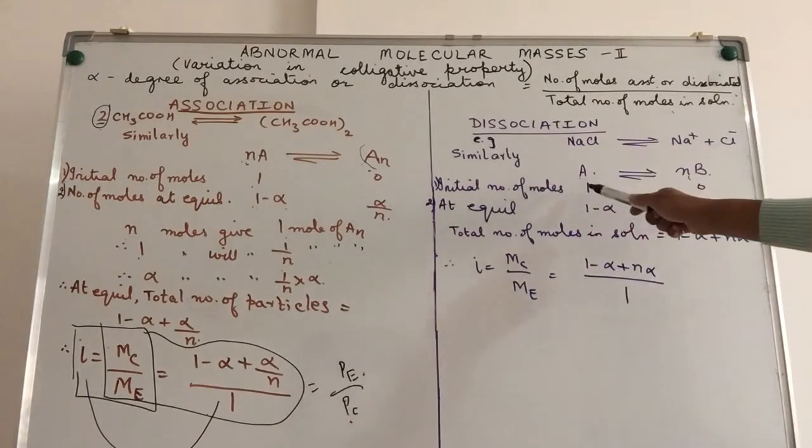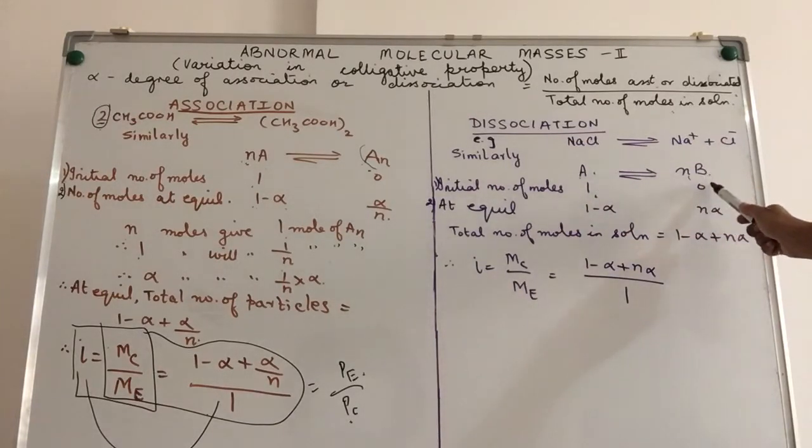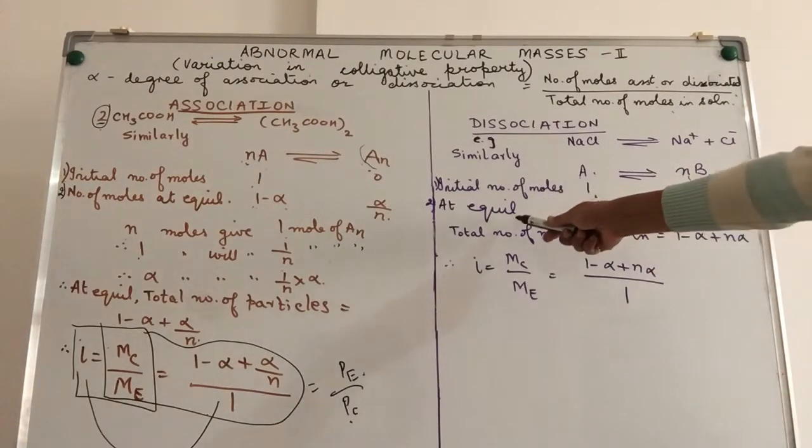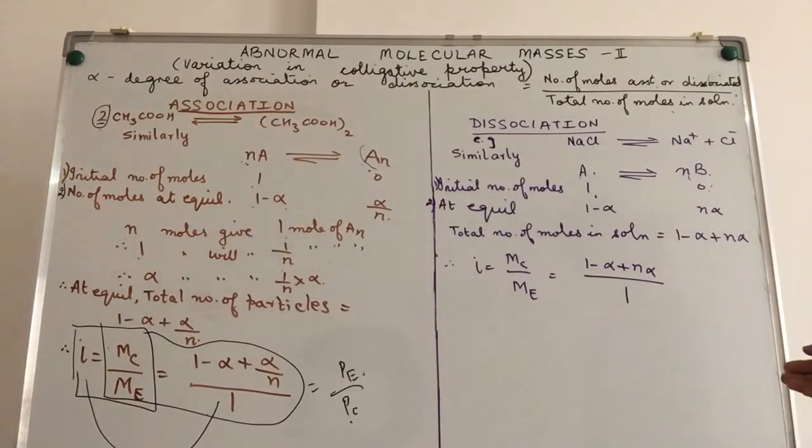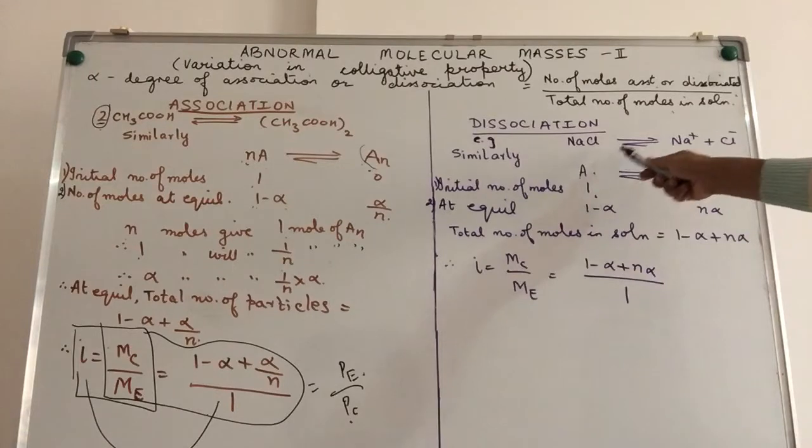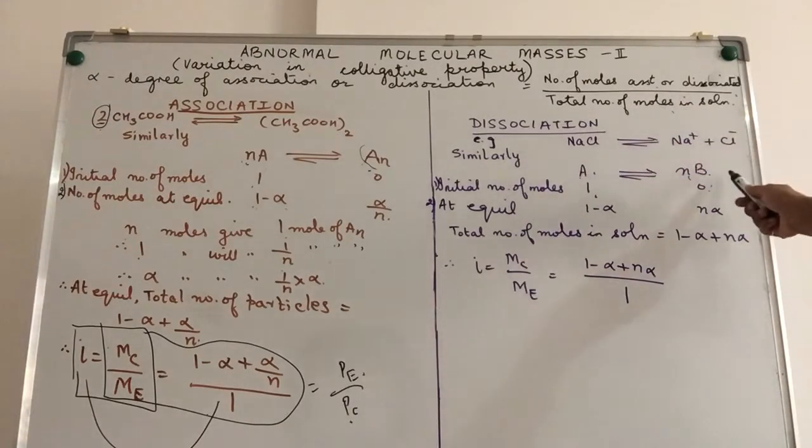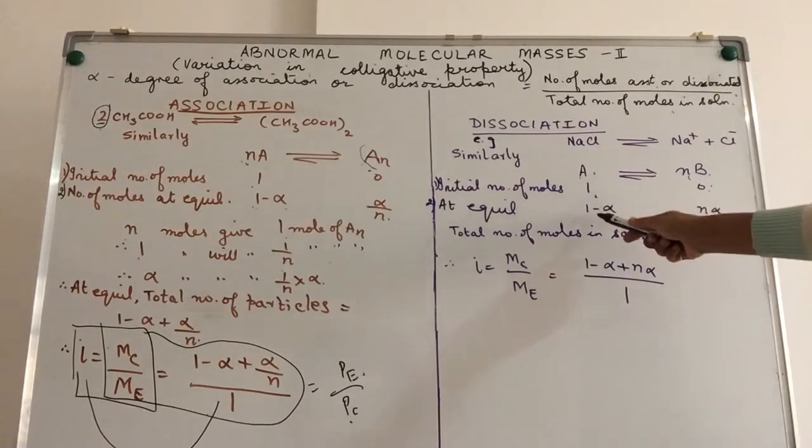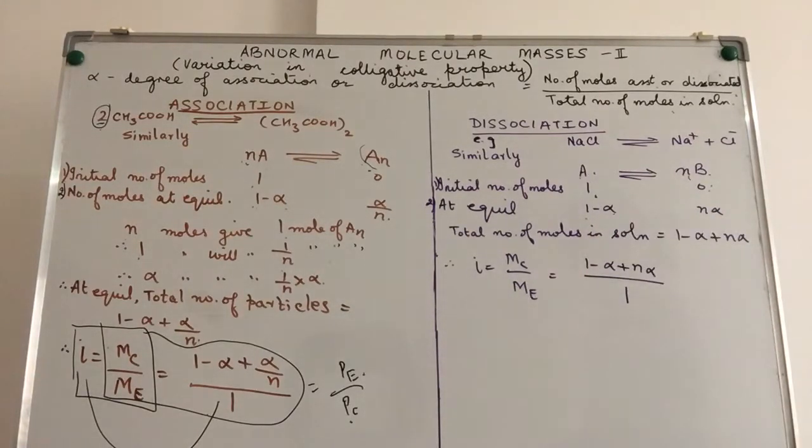So, we start with initial number of moles of A as 1. We don't have initially when we start the reaction under basic conditions. We're saying that the number of ions are not there. That means, we've just added the solute to the solution. At equilibrium, equilibrium means after dissociation of A has taken place and there is a dynamic equilibrium between the molar form and the ionic form of the substance. We have alpha. That means, 1-α is the number of particles of A left. Here, alpha will be defined as degree of dissociation. If you notice, both the places we are using alpha only.